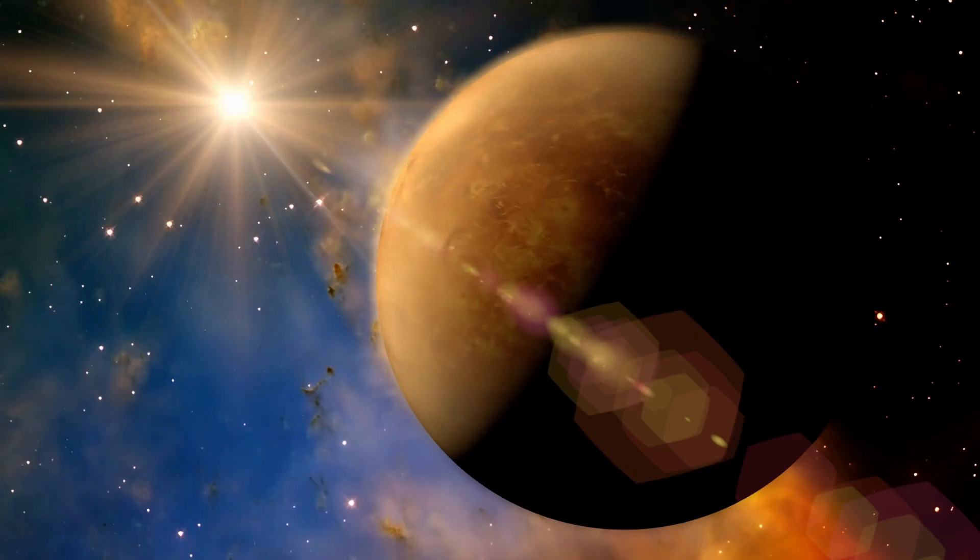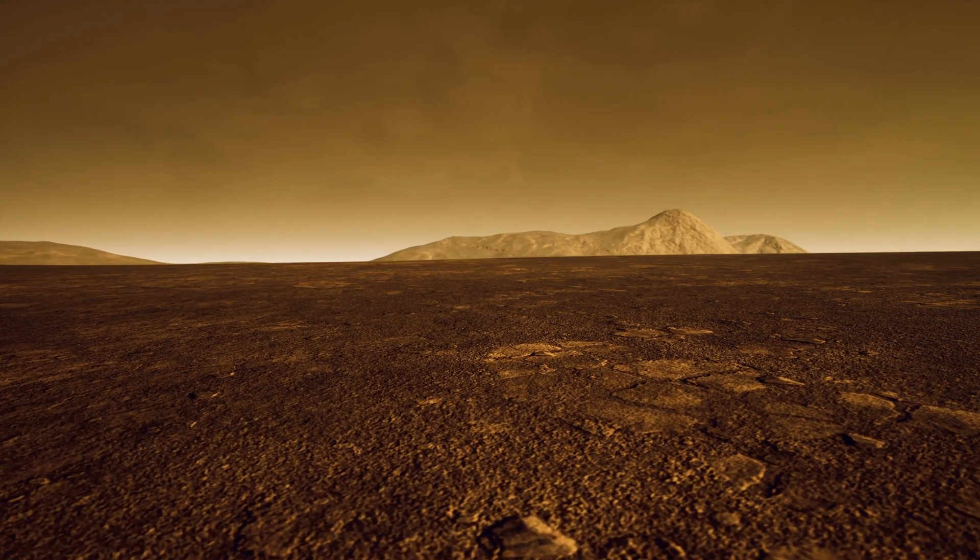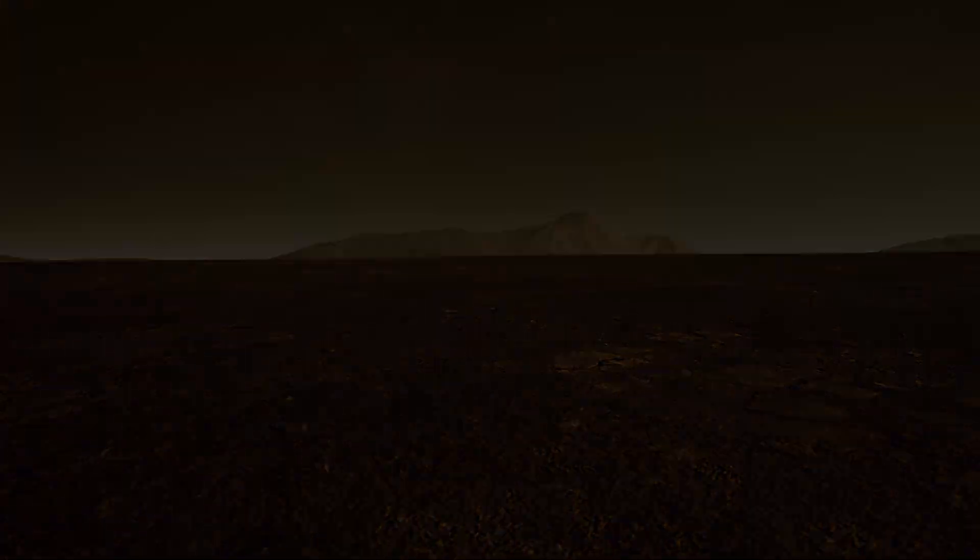Venus is like Earth's evil twin, same size, same mass. But instead of beaches and puppies, it has acid rain, crushing pressure, and temperatures hot enough to melt lead.